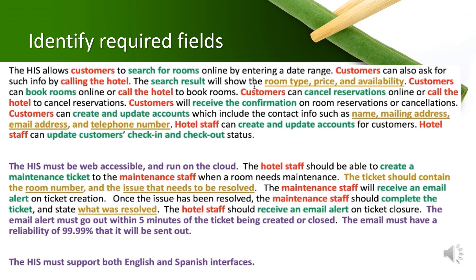Meanwhile, name, mailing address, email address, and phone number are related to contact information required by the account data store. Data needed for a ticket are room number, issues, and resolution. These are three sets of fields which are directly translated from the case study. However, when we want to create the data store, we have to have the skill to imagine how the data will be stored in the database in future.